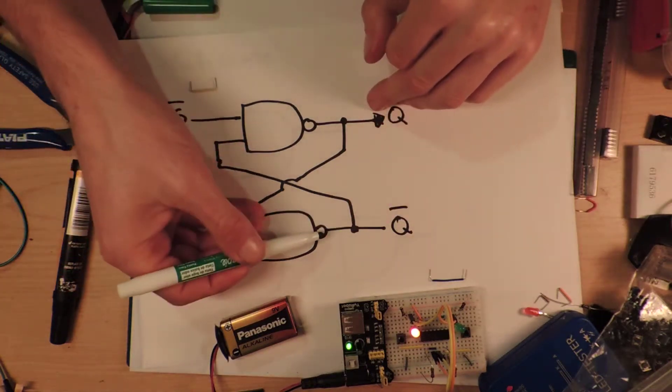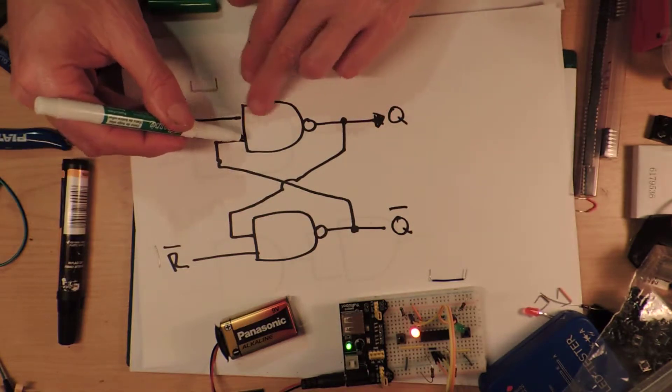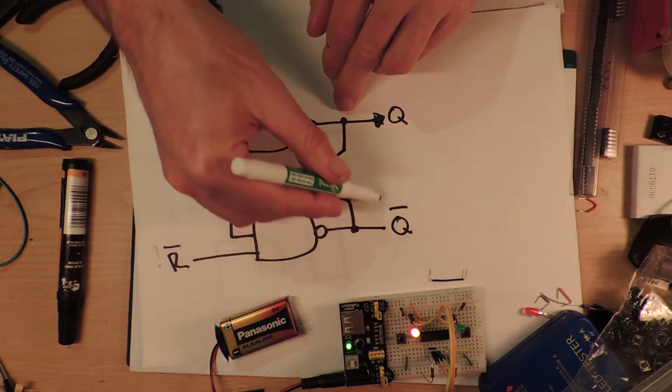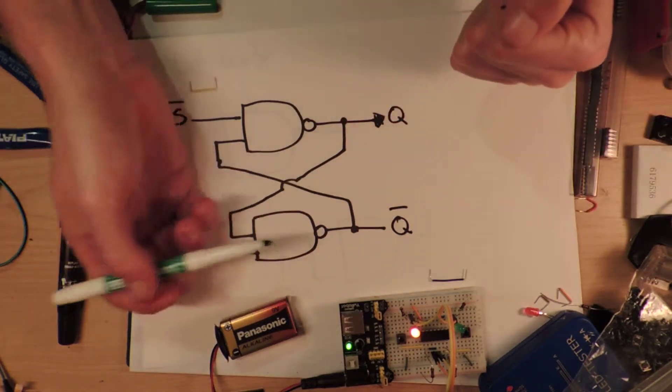And if you think about it, if it's the other way around, if this is high, then that will go into here and that will be low. Low will go into there and the output will be high. So you get a stable state. So there's two stable states.